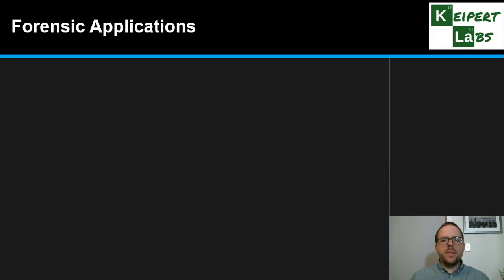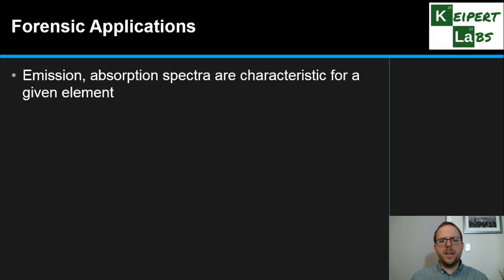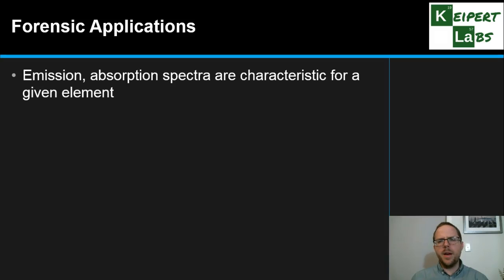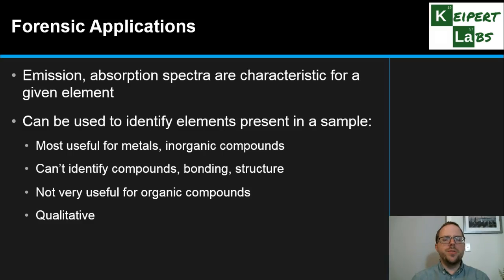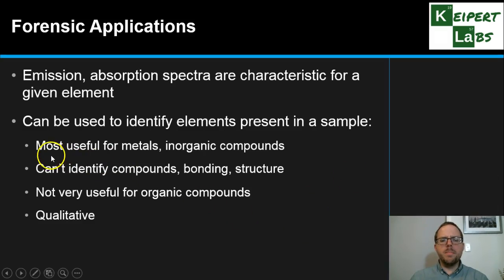So why would we bother? What's the value in this technique? Emission and absorption spectra are characteristic for a given element — a mercury atom will always give off the same type of emission spectrum, which will be different to a chlorine atom, different to hydrogen, helium, and nitrogen. All these different elements give off their own characteristic spectrum. That means if we subject a sample to the conditions that produce an emission spectrum, we can use it to identify the elements present. This is most useful for metals and then inorganic compounds.